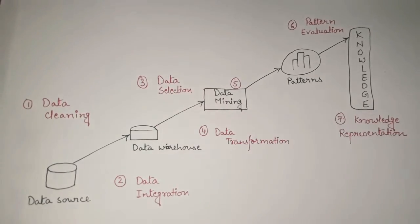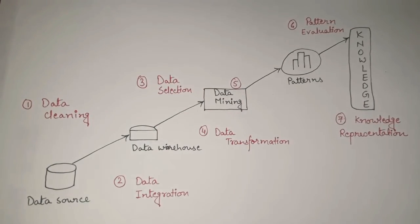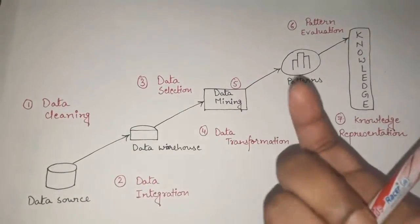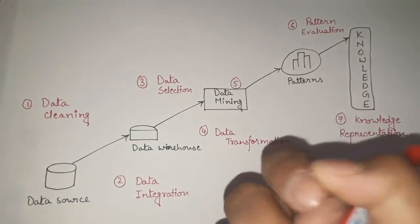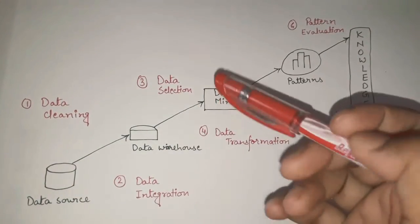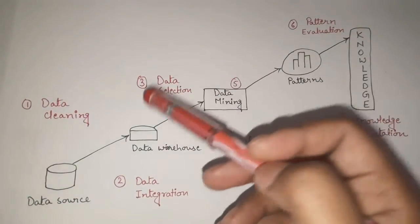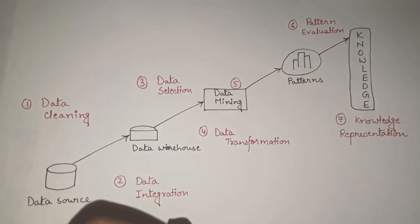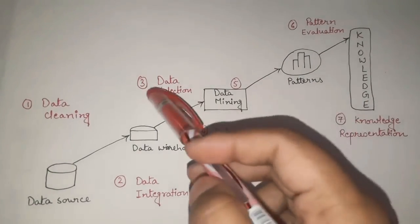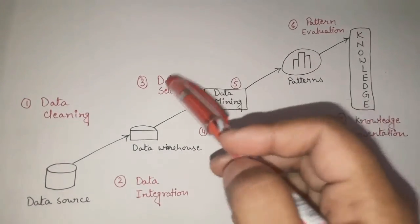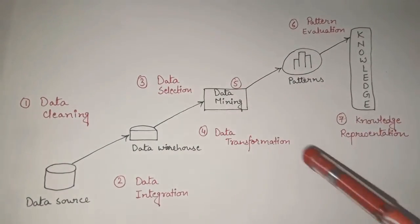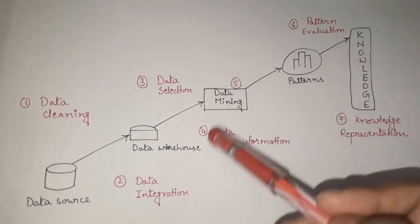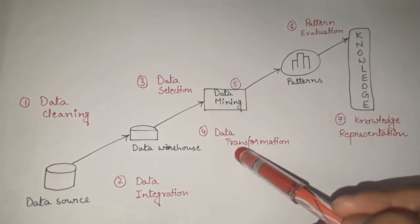After storing data in the data warehouse, we perform the third step: Data Selection. Data selection means selecting the necessary data that will be useful for deriving our knowledge.